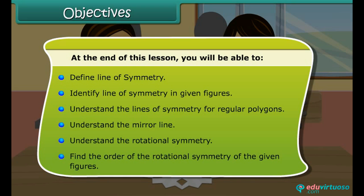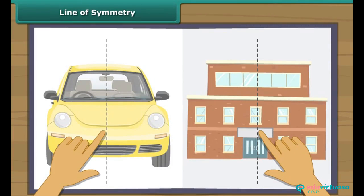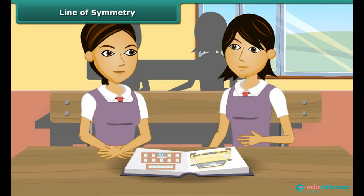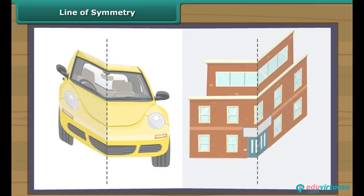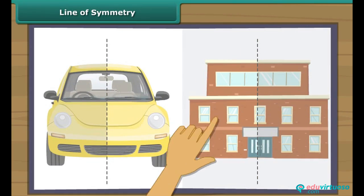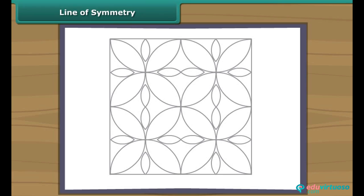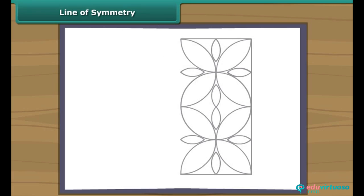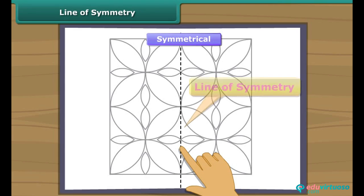Look at these figures. The line you can see is the line of symmetry of these figures. When we fold the figure about this line of symmetry, we will see that the two parts of the figure are coinciding. Let's take this figure now. When we fold this figure from the center, we will see that the two parts of this figure are coinciding. So this figure is symmetrical, and this line is the line of symmetry.